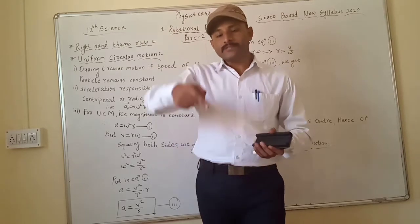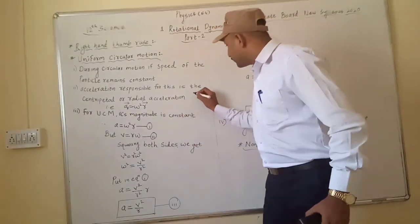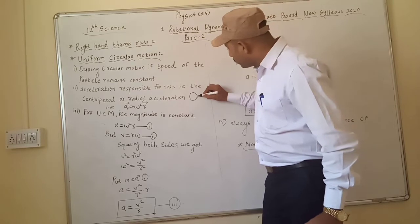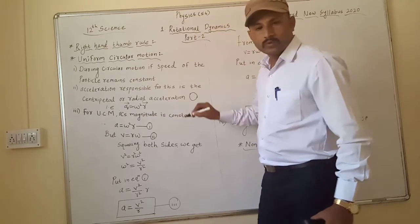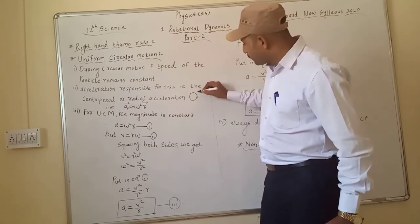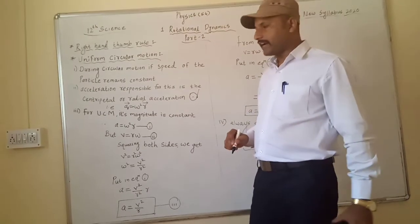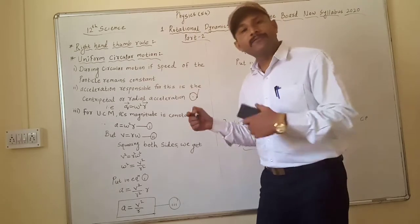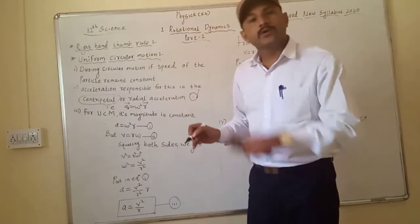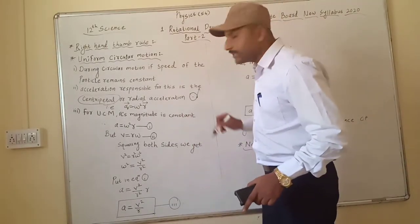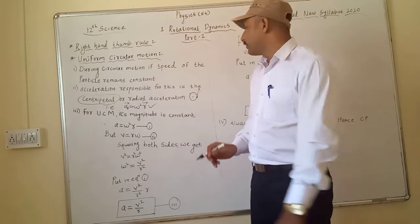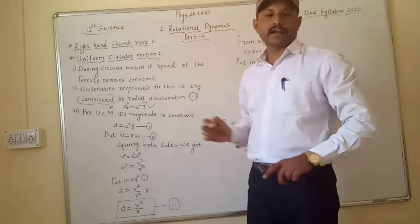When the object is rotated, for example, there is a particle on the object. When this object moves in circular motion, the particle moves away from the centre of the circle. That is centrifugal force. But here the centripetal force is towards the centre, so we get the equation A = −ω²R, where ω is the angular velocity.